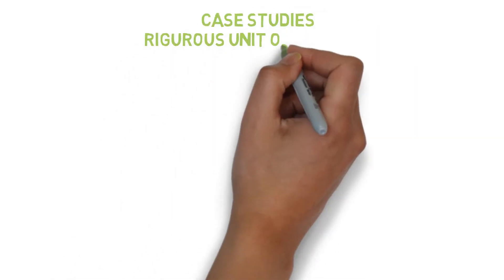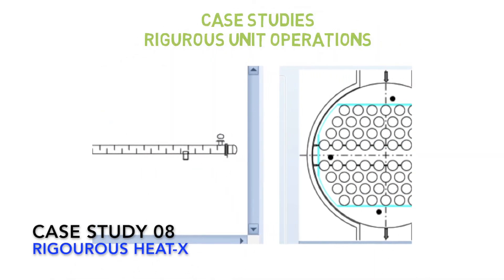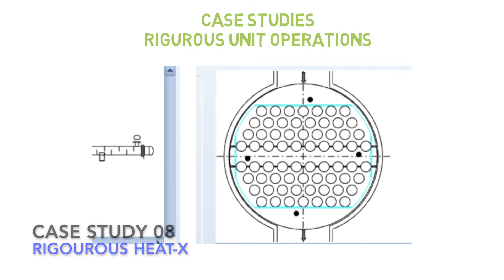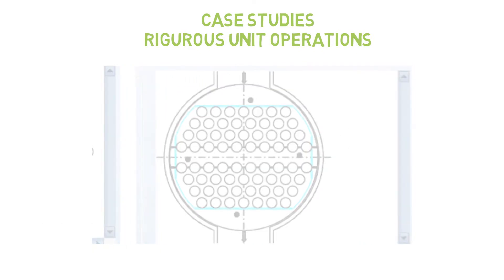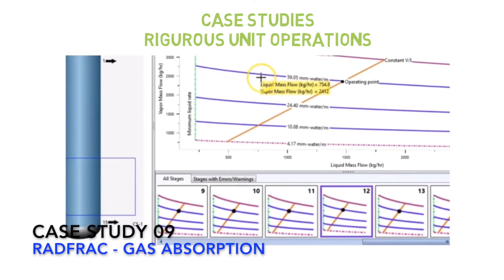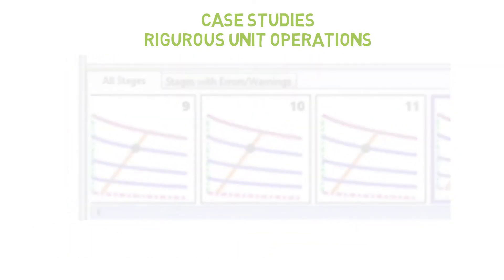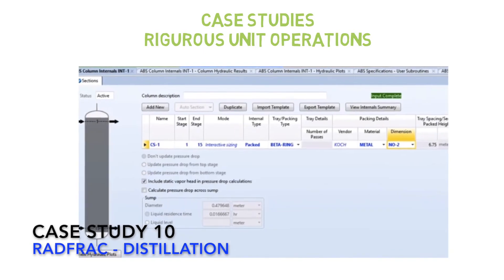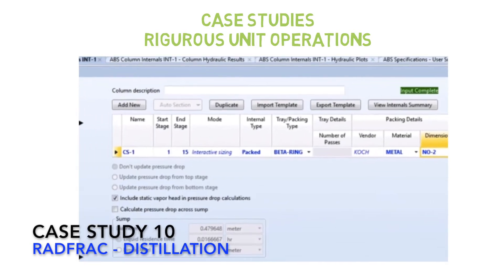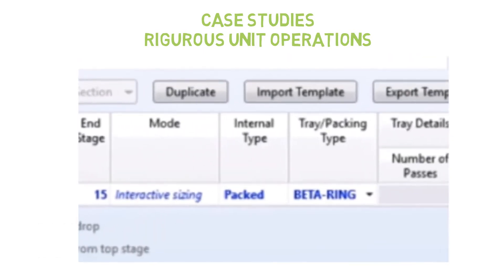In this section, we're going to cover rigorous unit operations — for instance, shell and tube heat exchanger, gas absorption columns, and distillation columns — paying special attention to the more detailed design of the equipment.